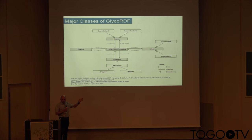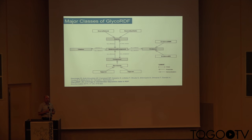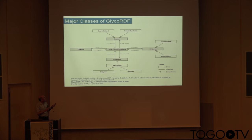The main classes are: the compound class to store the actual glycan structures, references for literature, references for experimental evidence and taxonomy, and a core reference compound that links everything together.